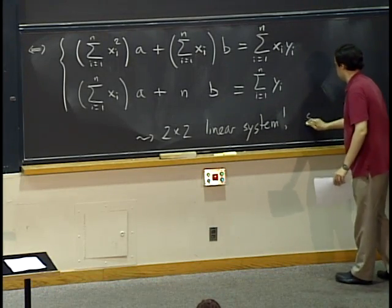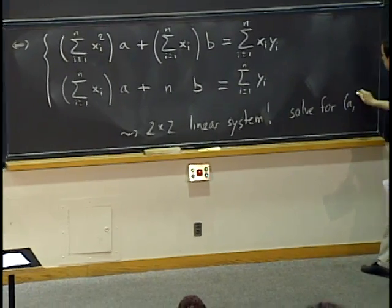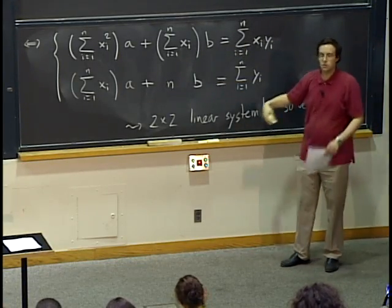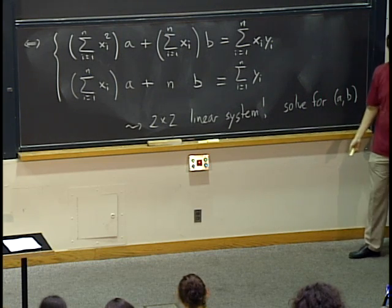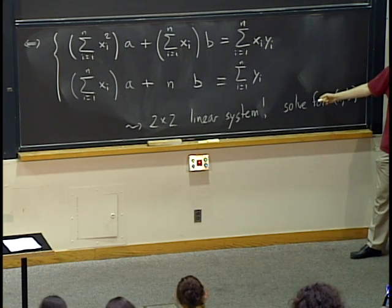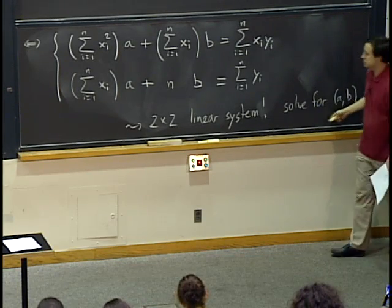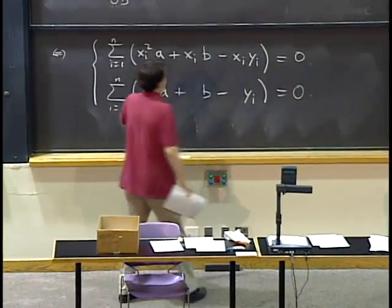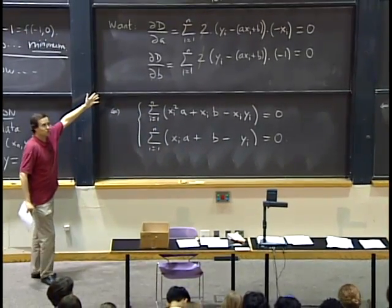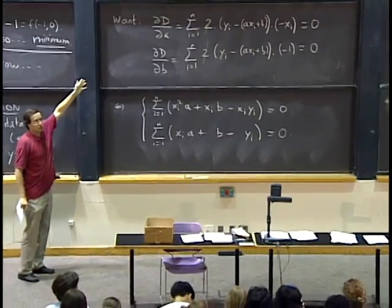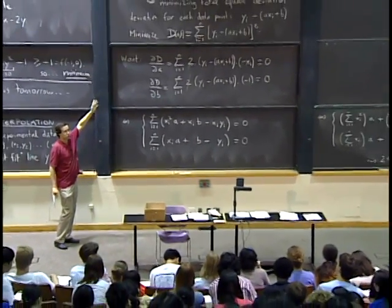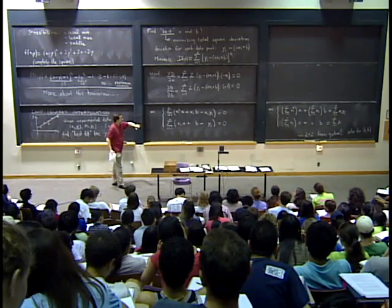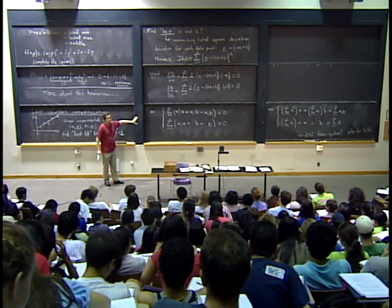We can solve this for a and b — we know how to solve two-by-two linear systems. That is how we find the best fit line. Why is this the best rather than the worst? We just found a critical point, which could actually be a maximum. We will have the answer next time, but if you apply the second derivative test we'll see tomorrow, it turns out this is indeed a minimum.